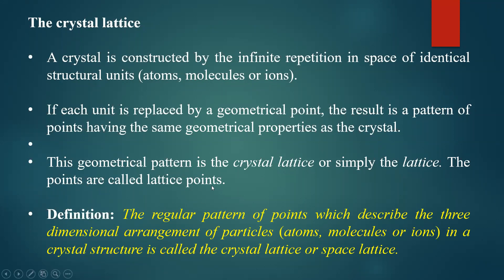The points are called lattice points. The regular pattern of points which describes the three-dimensional arrangement of particles in a crystal structure is called crystal lattice, space lattice, or simply lattice. In the lattice there are no atoms — it only gives the markings where atoms can be distributed. Crystal lattice is an imaginary group of points describing the arrangement of particles.